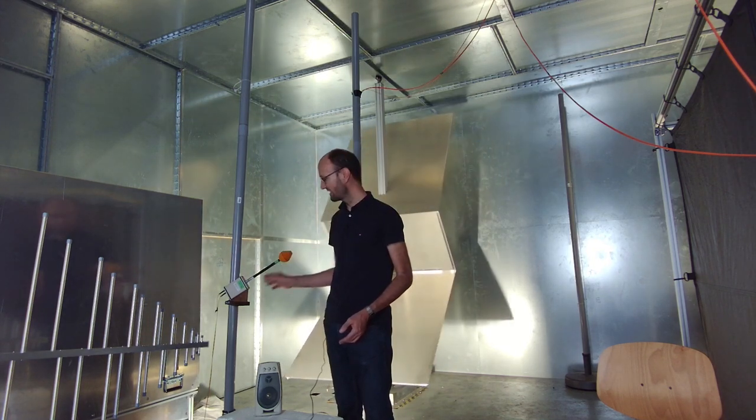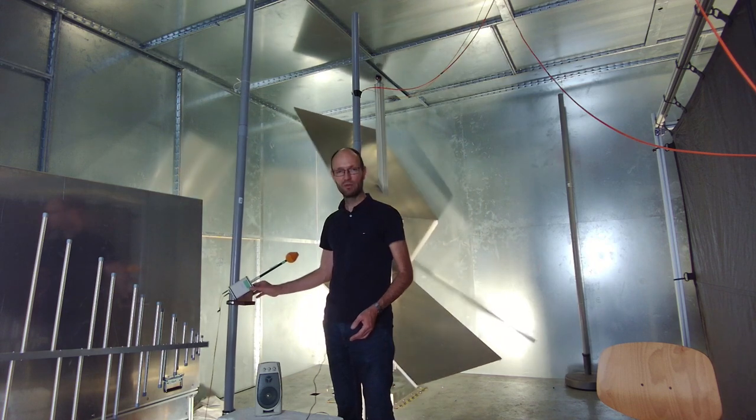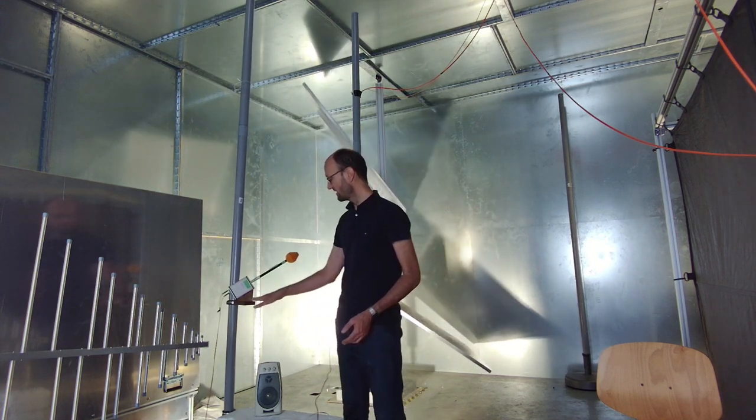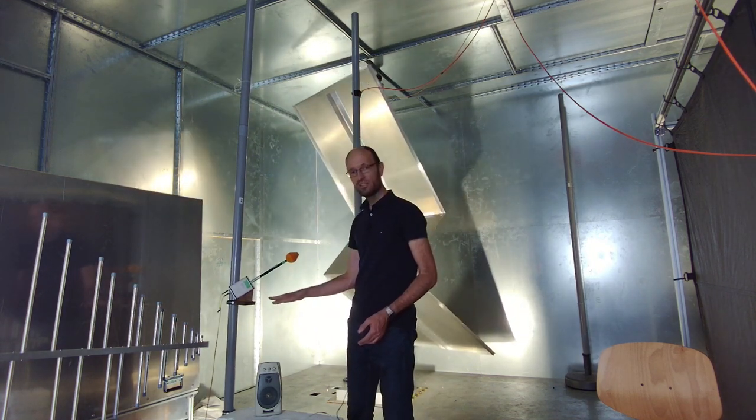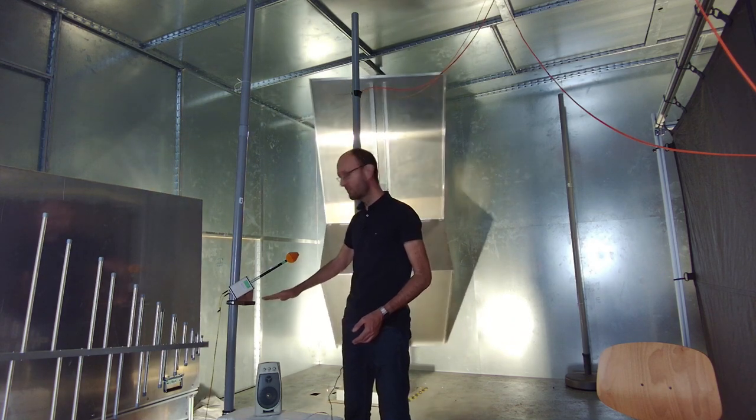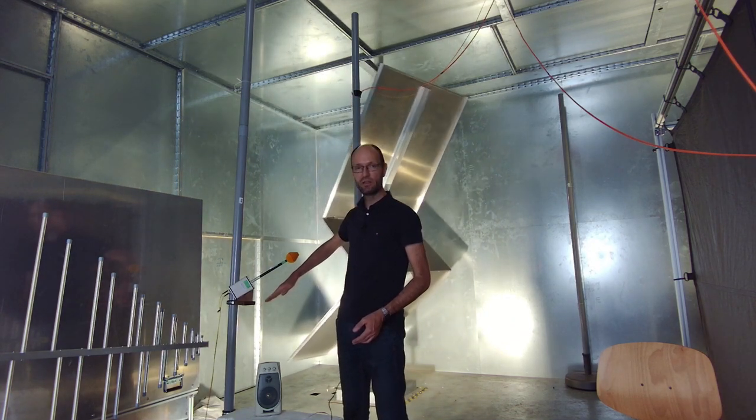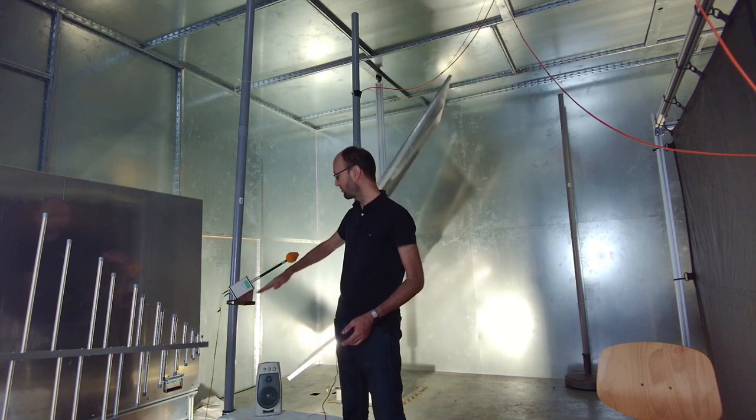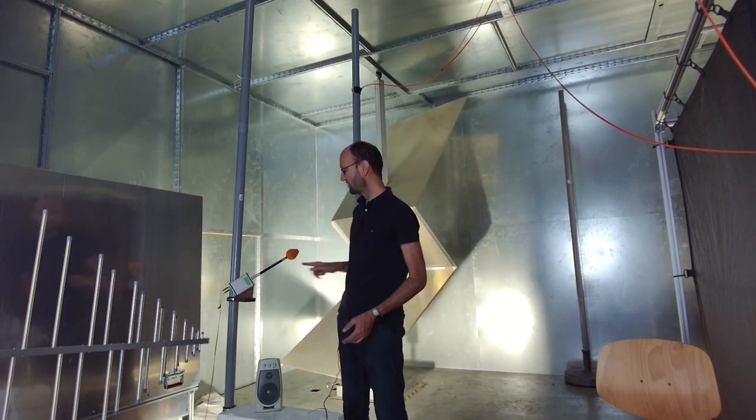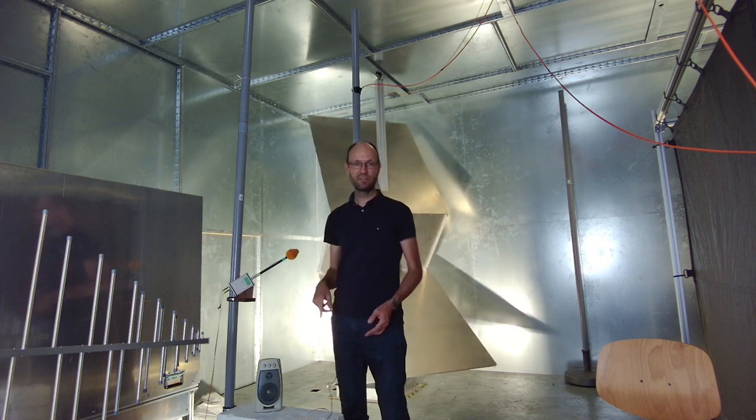And that's why these field probes are also mounted in a strange way. If they are rotated by 45 degrees in this direction and then tilted by 37 point something degrees upwards, they then measure the field in x, y, and z direction.